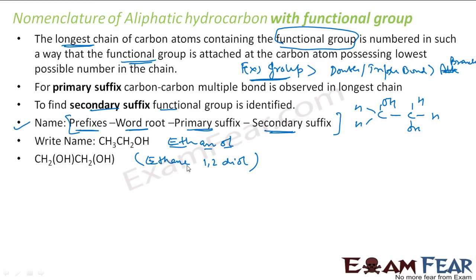There is no prefix here. The word root is ETH because there are two carbon atoms. The primary suffix indicates the number of carbon-carbon multiple bonds — there are no double bonds, all single bonds, so AN is the primary suffix. The secondary suffix gives information of the functional group: it is an alcohol group, and since there are two alcohols, it is 1,2-diol.